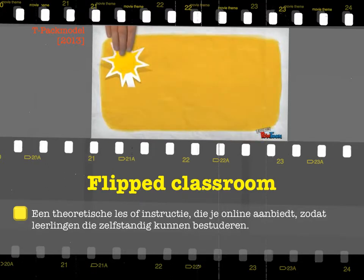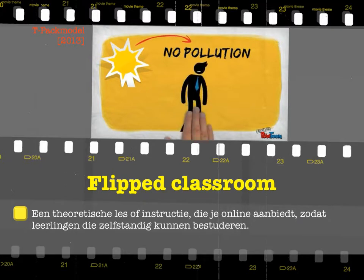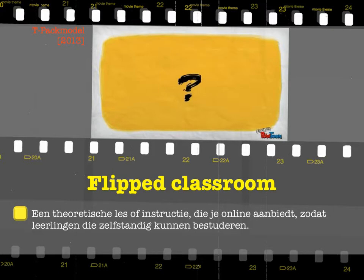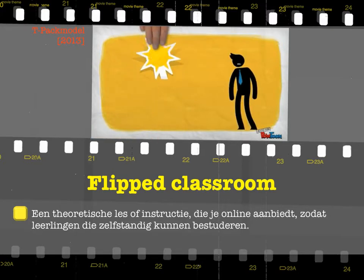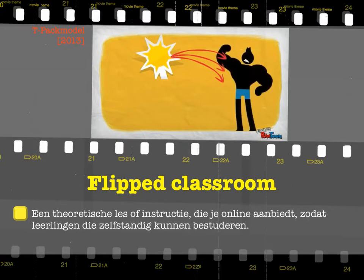Solar energy is abundant and non-polluting, yet currently it cannot be directly harvested by human cells to make food. What modifications to the human body would allow them to use solar energy and photosynthesis for basic cellular food production?